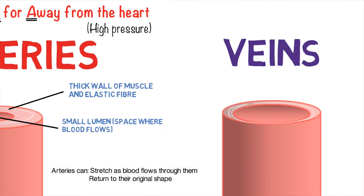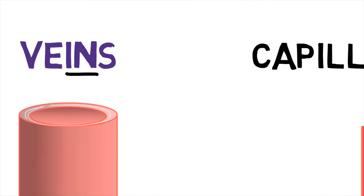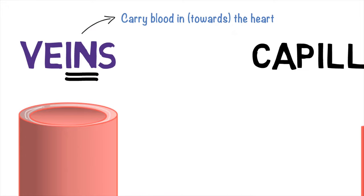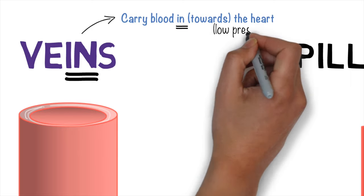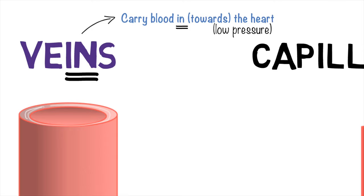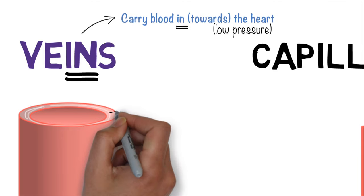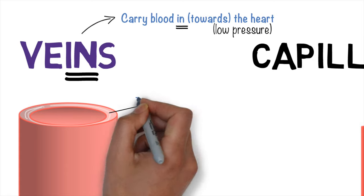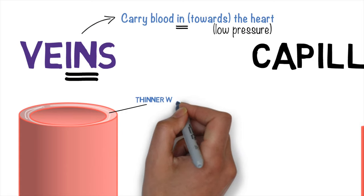We then have the veins. And the little tip for you here is they have the word 'in', veins. And that is because they carry blood in towards the heart. Now, the thing that you'll notice straight away about the veins is the lumen, which is the big gap in the middle, is large. So the blood is under low pressure. And therefore, it doesn't need to have the thick walls. It's got thin muscular walls, thinner than arteries.